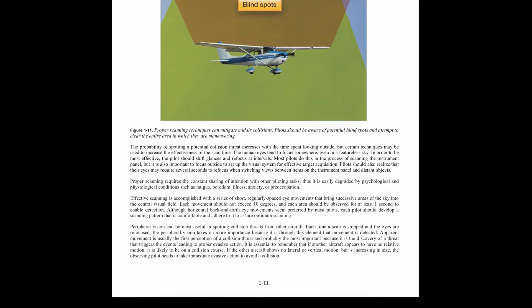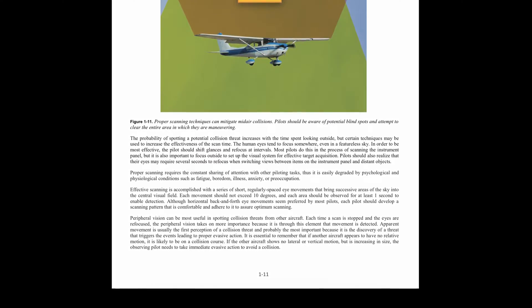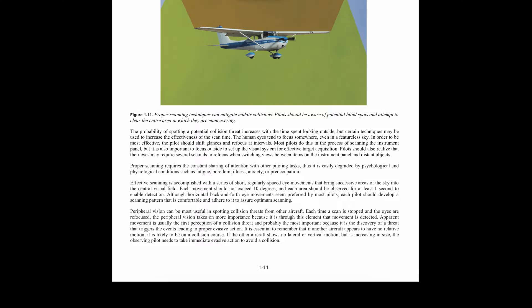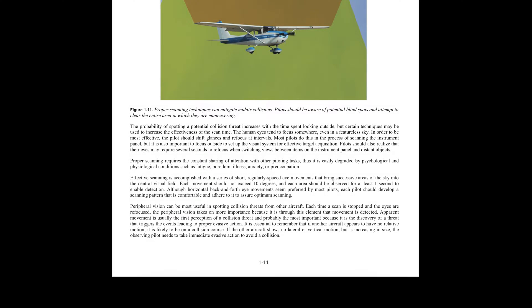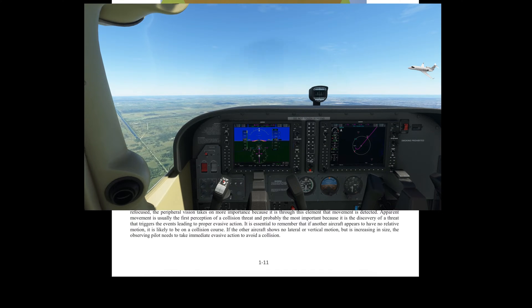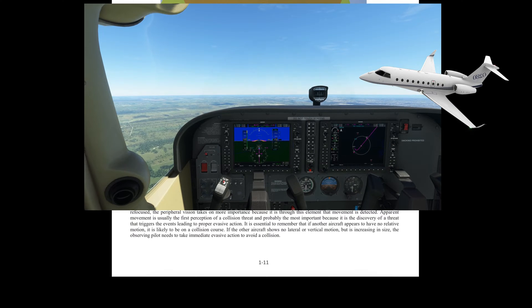Peripheral vision can be most useful in spotting collision threats. Each time a scan is stopped and the eyes are refocused, peripheral vision takes on more importance because it is through this element that movement is detected. Apparent movement is usually the first and most important perception of a collision threat, as it triggers the events leading to proper evasive action. If another aircraft appears to have no relative motion, it is likely on a collision course. If it shows no lateral or vertical motion but is increasing in size, immediate evasive action is needed. Visual scanning should be taught at the very beginning of flight training, with reference to AC90-48 and the Aeronautical Information Manual.